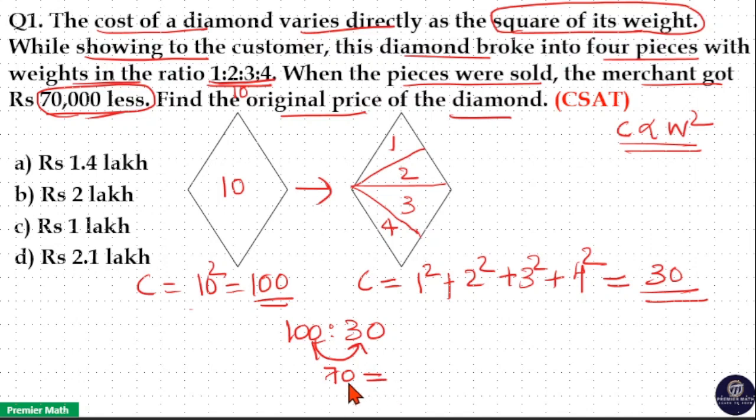But in the question, it says there is 70,000 rupees loss, which means this 70 units is equal to 70,000. Because in the ratio, original cost is 100 units, but finally when it is broken into 4 pieces, the 4 pieces together cost 30 units. The difference in the ratio is equal to 70 units, which equals 70,000 rupees.